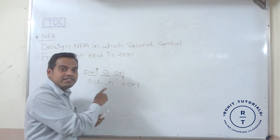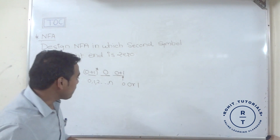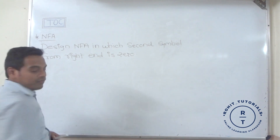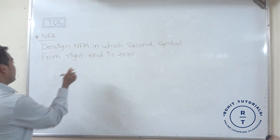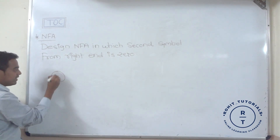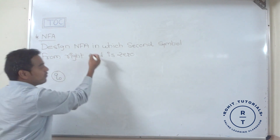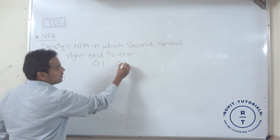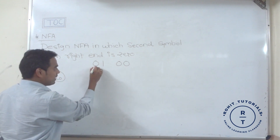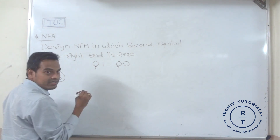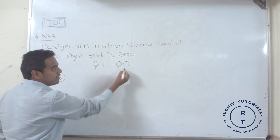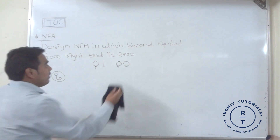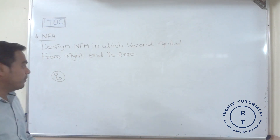This is the key problem statement. We have to design the finite automata for this statement. We always start with the initial state q0. The minimum string from the problem statement is either '01' or '00', because the second last symbol is zero and the last symbol is either zero or one.